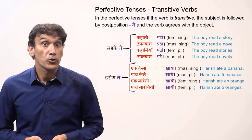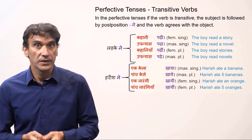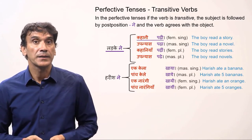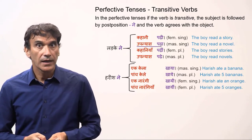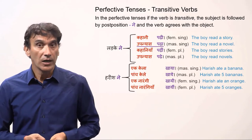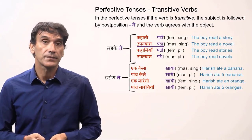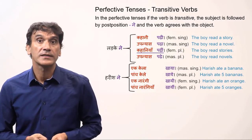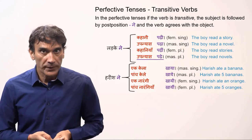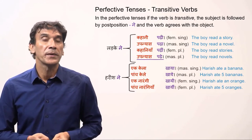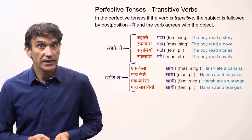As mentioned, the subject is followed by 'ne', which behaves like a postposition, so the noun takes the oblique form — 'ladka' becomes 'ladke'. Ladke ne kahani padhi — the boy read a story. 'Kahani' (a story) is feminine, so the verb is 'padhi'. Ladke ne upanyas padhe — the boy read novels. 'Upanyas' is masculine plural, so the verb takes the masculine plural form 'padhe'.